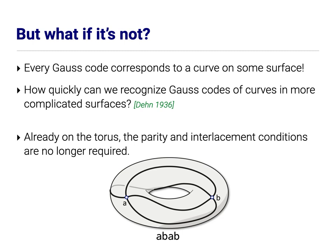But then this raises a natural question, which was actually asked by Dehn in his original paper. Every Gauss code actually corresponds to a curve on some surface, it turns out. How quickly can we recognize Gauss codes for curves on more complicated surfaces, for example, the torus? And one thing playing around with this one quickly realizes that neither of the conditions, either parity or interlacement, that are required for a code to represent a planar curve are necessary for a code to represent a curve on the torus. So on the screen here is an example of a closed curve on the torus that has Gauss code ABAB. This fails the parity condition and so is not compatible with any curve in the plane, but there's a curve on the torus. Now, again, not every Gauss code that is incompatible with something in the plane is compatible with something in the torus. It's just we don't know simple conditions like this that work.